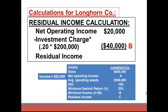That investment charge of $40,000 is the answer to B — the minimum income. This manager knew: given assets of $200,000, I have to earn $40,000 of income this year. Since they did not, there is a negative residual income of $20,000 — that's letter C. Note that the actual ROI was 10% and the minimum ROI was 20%, which confirms a negative residual income, because this division did not earn the minimum rate of return.